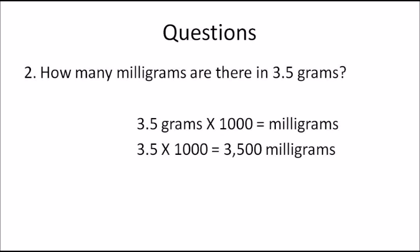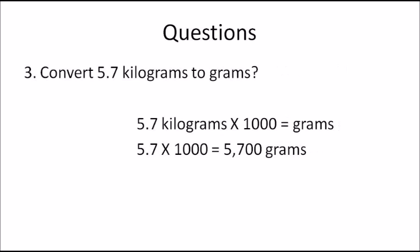Question 3: Convert 5.7 kilograms to grams. Your answer should be larger than 5.7, because you're going from a higher unit of measure to a lower one. So 5.7 × 1000 = 5700 grams.